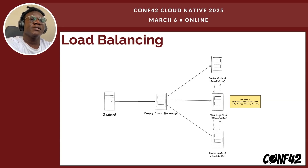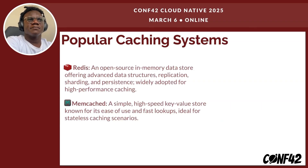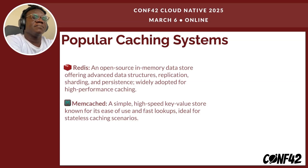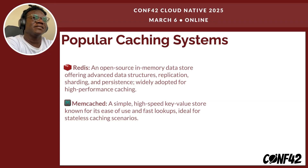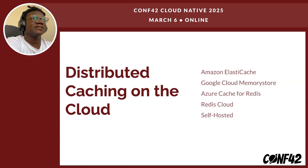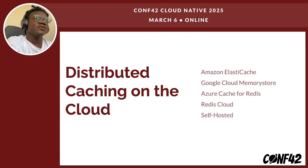You just configure your Redis cluster to replicate or shard your data based on your requirements. Some of the popular caching systems are Redis and Memcached. Redis is an open-source in-memory data store that offers advanced data structures, replication, and sharding, and is widely adopted for high-performance caching. Memcached is a simple key-value store that is very fast for lookups. Cloud providers also offer managed solutions: AWS has Amazon ElastiCache, Google Cloud has Memory Store, and Azure has Cache for Redis.